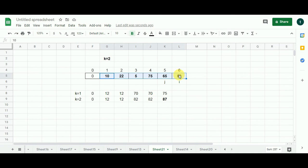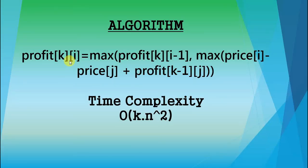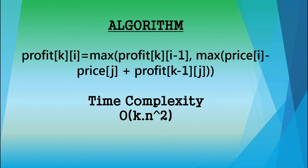The algorithm is: profit[k][i] = maximum of (profit[k-1][i], maximum of (price[i] minus price[j] plus profit[k-1][j])). Implementing this in a program will work; you can verify it with the dataset from this video. The time complexity of this algorithm is O(k·n²). That's the end of this video — I hope you enjoyed it. Give it a thumbs up, and until the next video, goodbye.